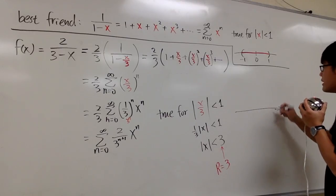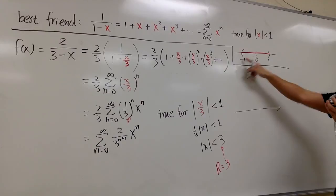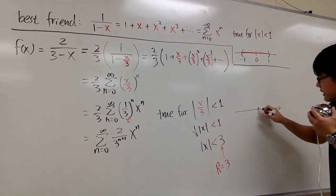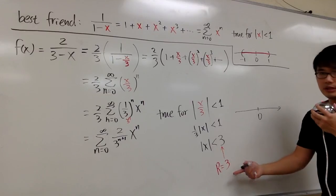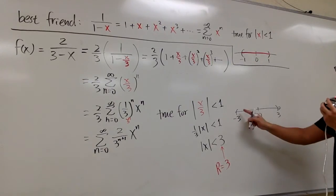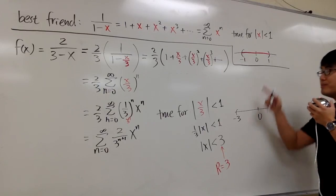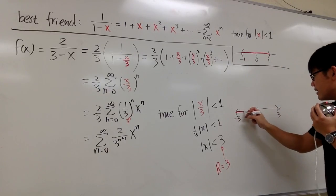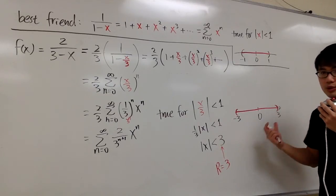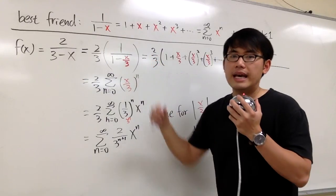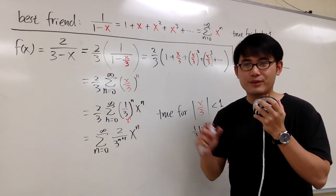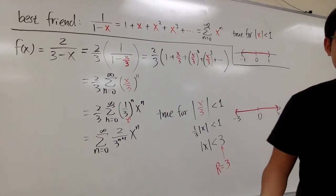And for the interval of convergence, once again, because it came from our best friend, the best friend didn't include the endpoints. And then we were doing algebra only, we're just plugging x/3. The center is at 0, and we know that because the radius of convergence is 3, we go to the left 3 units, go to the right 3 units. This is going to be negative 3 and positive 3. Once again, we do not include endpoints because it came from our best friend. But anything inside will be fine. We only need to worry about checking endpoints if we use our best friend along with integration or differentiation. But this is it. We'll see you next time.